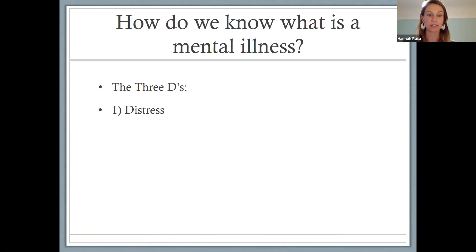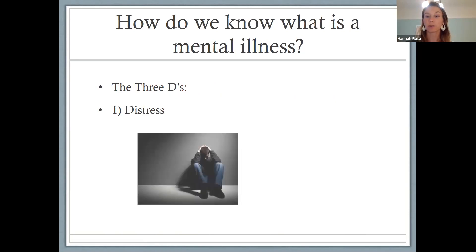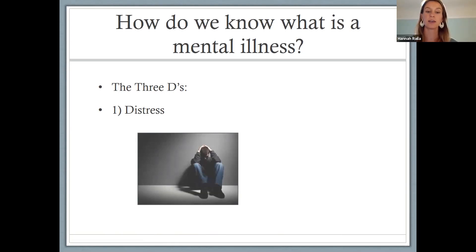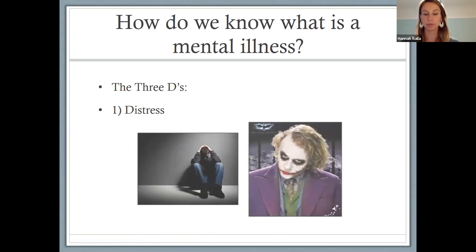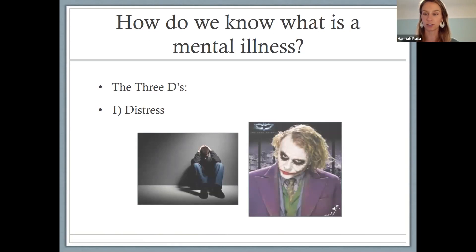The first one is distress. That can be either personal distress, like someone who has depression who's very upset about it, or anxiety where it's very hard to get things done or leave the house. But there are other kinds of mental illness where the individual might not be distressed, but they are making people around them and in their community very distressed. A classic example of that would be psychopathy, which is another term for antisocial personality disorder. Classic characters like the Joker might arguably have psychopathy, and they are causing distress for people around them, even if not themselves.